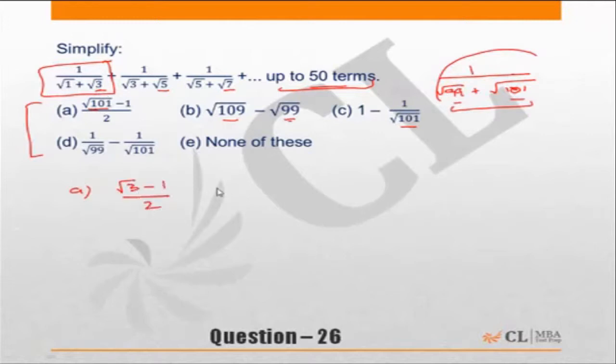Under root 3 minus 1 upon 2 would be choice A. Choice B: 109 is 99 plus 10 or 101 plus 8, so if I look at 1 plus 10, under root 11 minus 99.